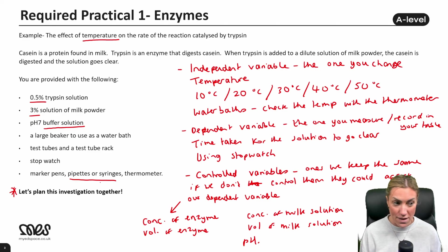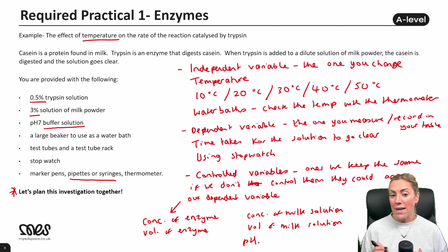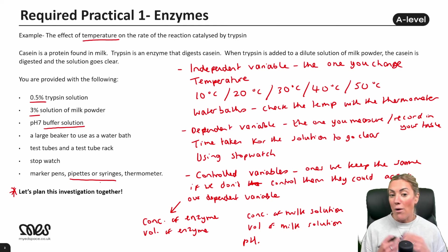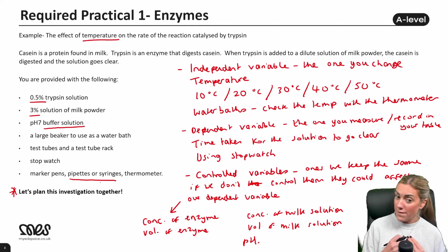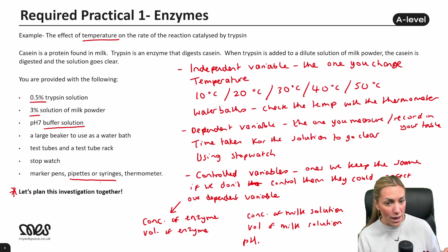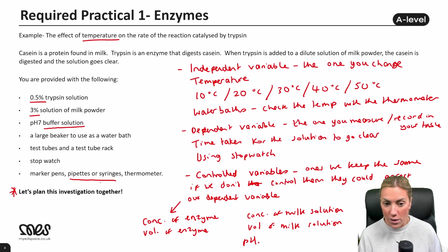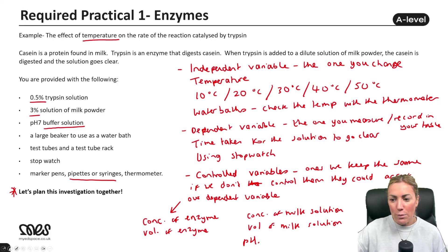All these controlled variables — if we did not control them — would affect the time taken for the solution to go clear: more enzyme means more active sites, more substrate means more enzyme-substrate complexes, and changing pH affects the tertiary structure of the enzyme and the shape of the active site. With any practical, think about your IV, DV, and CVs, and for each: how are you going to change it, measure it, and control it.